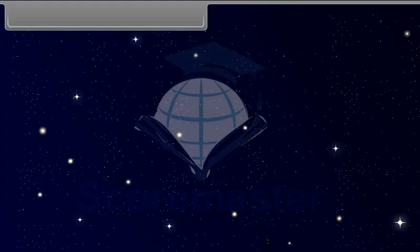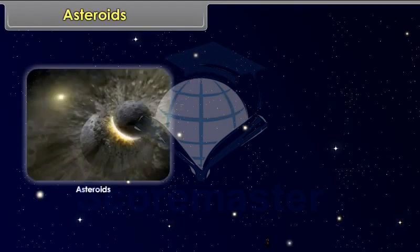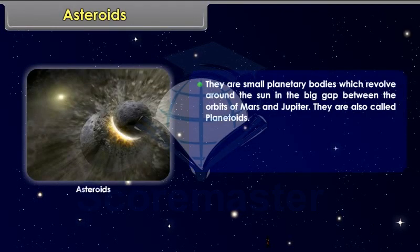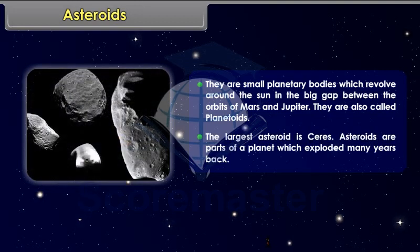Asteroids. They are small planetary bodies which revolve around the Sun in the big gap between the orbits of Mars and Jupiter. They are also called planetoids. The largest asteroid is Ceres. Asteroids are parts of a planet which exploded many years back.